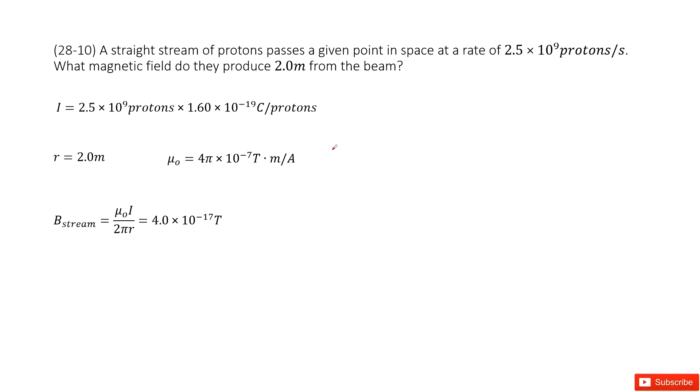Chapter 28 is about sources of magnetic fields. So we look at a straight stream of protons moving with a velocity. We can see it tells us it is 2.5 times 10 to the 9 protons per second. And it asks you what magnetic fields do these protons produce?